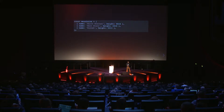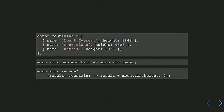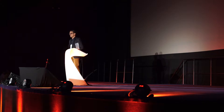Let me show you quickly by looking at this example. We have an array of objects representing mountains. As you all know, we can very easily use map to create a new array containing names of those mountains, or we can use reduce to calculate the total height of all mountains. Now let me rewrite these small pieces of code into point-free style.